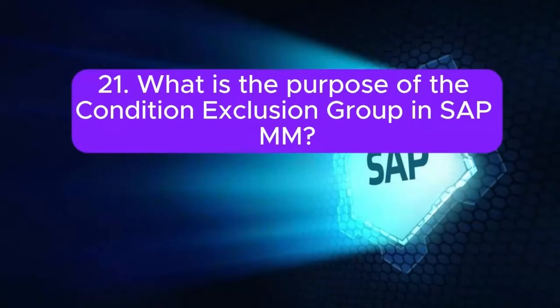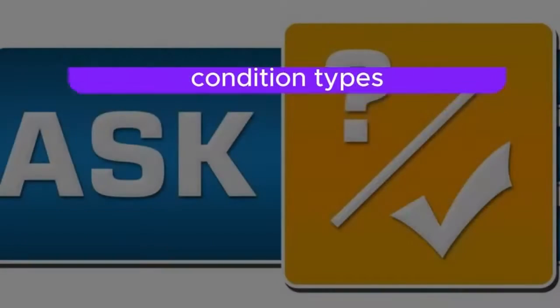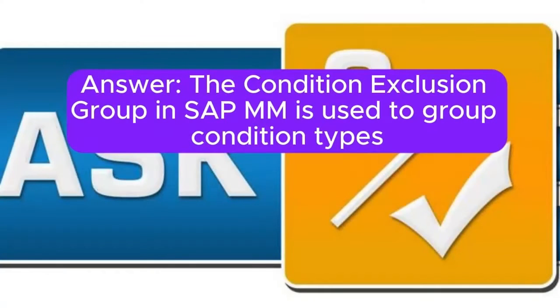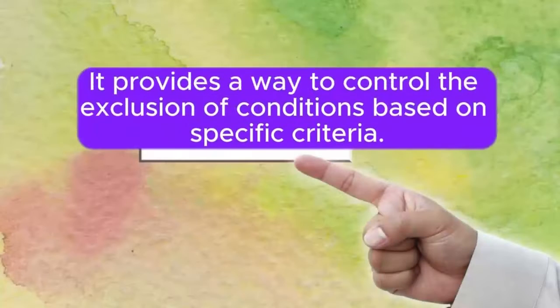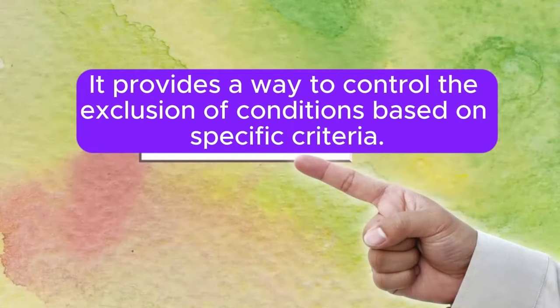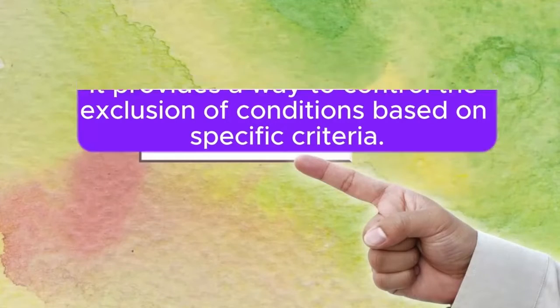Question 21: What is the purpose of the condition exclusion group in SAP MM? Answer: The condition exclusion group in SAP MM is used to group condition types that should be excluded if one condition within the group is met. It provides a way to control the exclusion of conditions based on specific criteria.